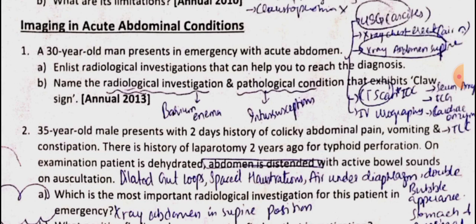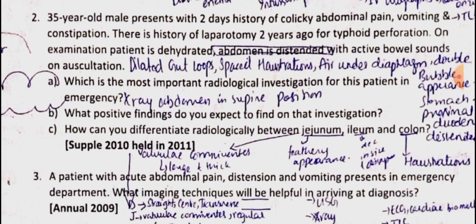Regarding the claw sign — it is seen in intussusception. The radiological investigation that demonstrates the claw sign is the barium enema. This is part of the GIT and lower GIT chapter. The pathological condition is intussusception and the investigation is barium enema.